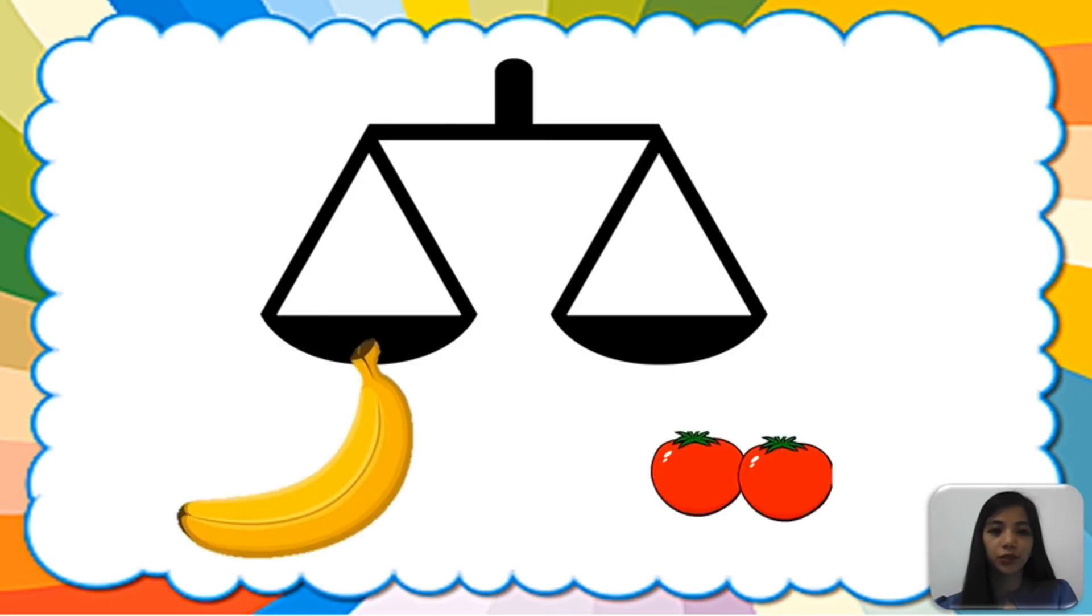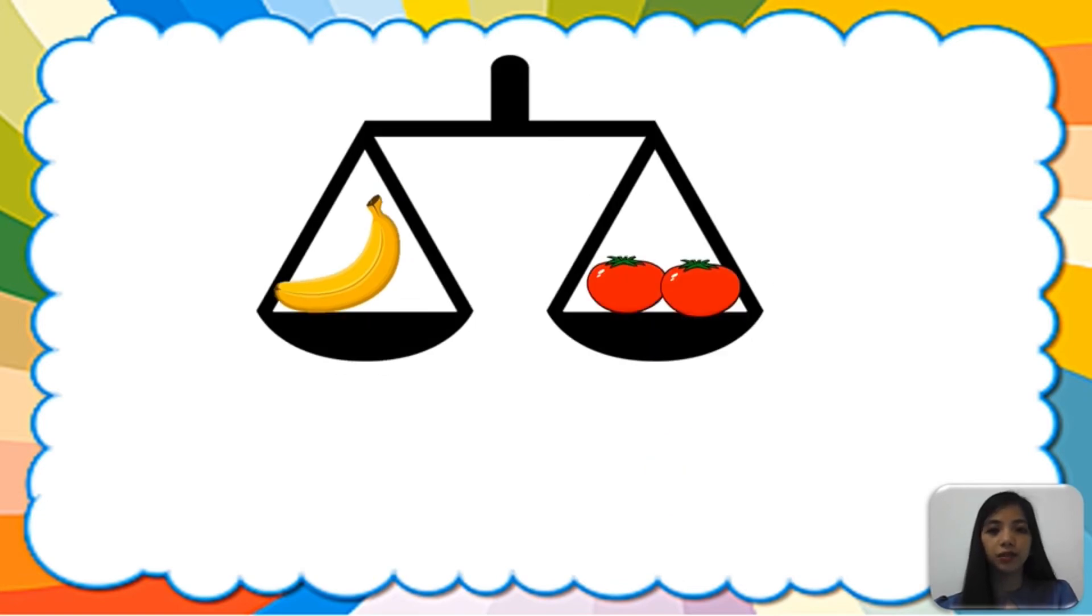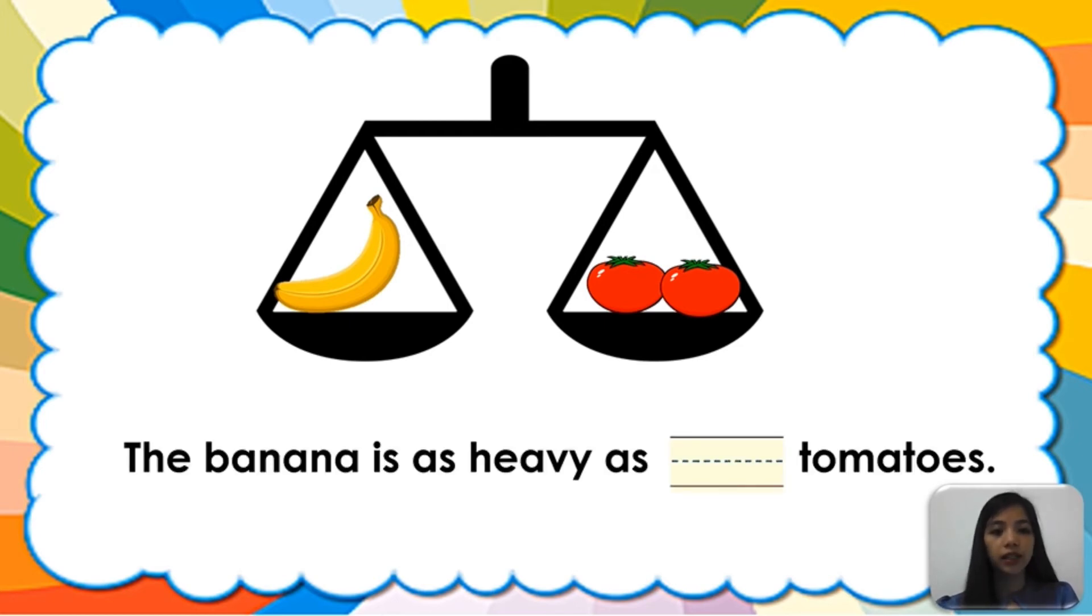Let's measure the banana and tomatoes. Put the banana and the two tomatoes. As you can see these fruits are equal. Therefore, the banana is as heavy as two tomatoes.